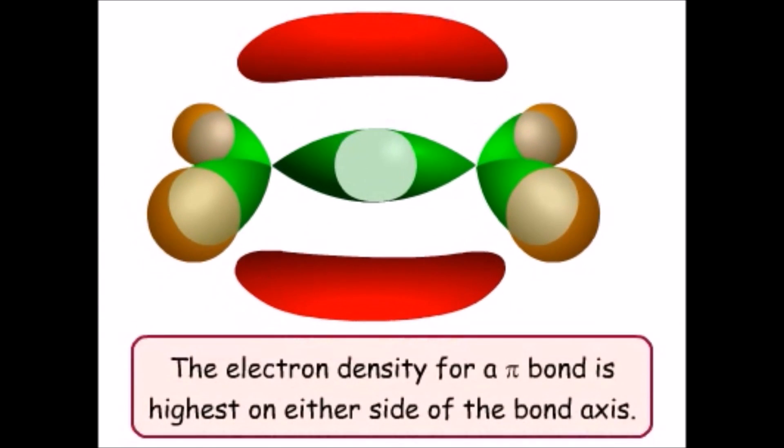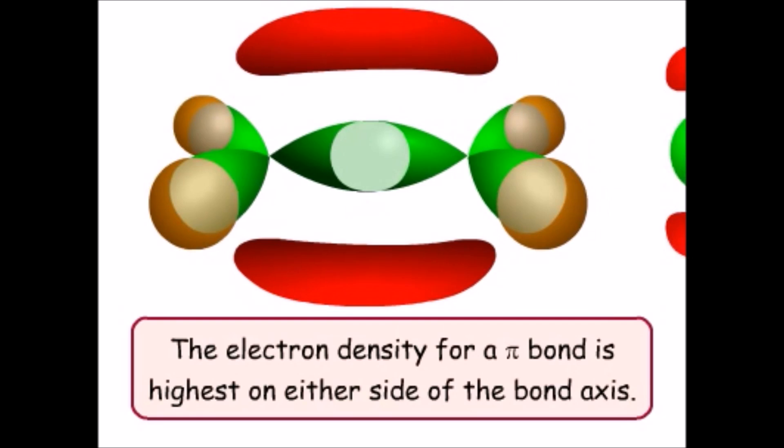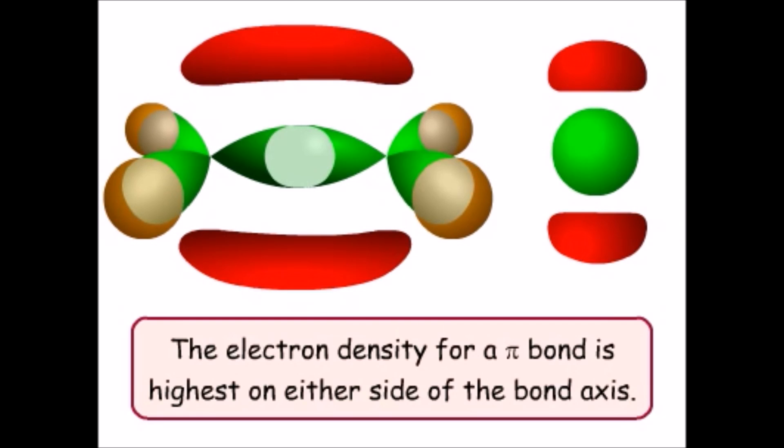The electron density for a pi bond is highest on either side of the bond axis. If we look at the pi bond from the side of the bond axis, we can see that it is above and below the plane of the atoms in ethylene.